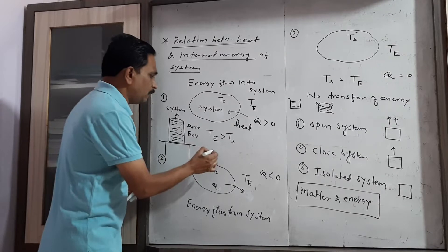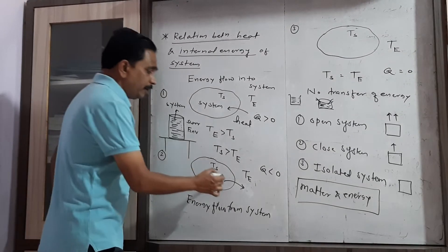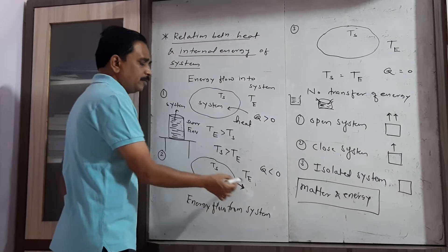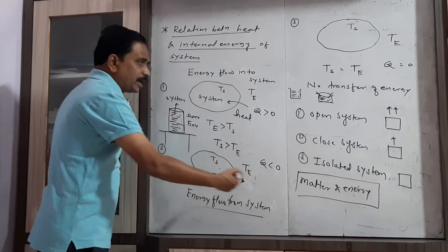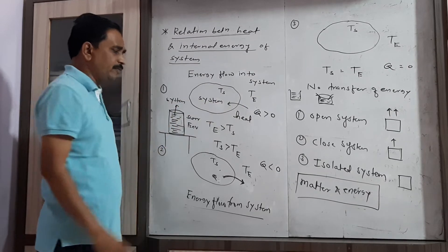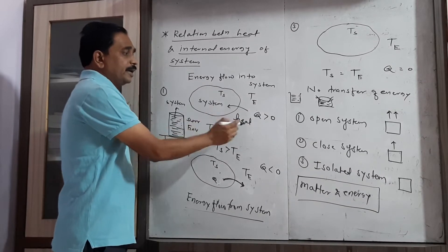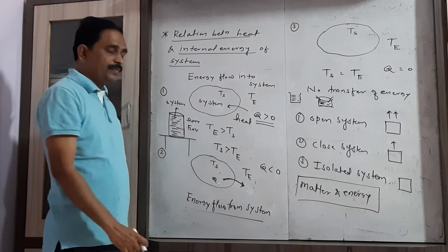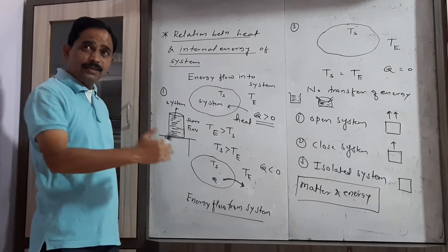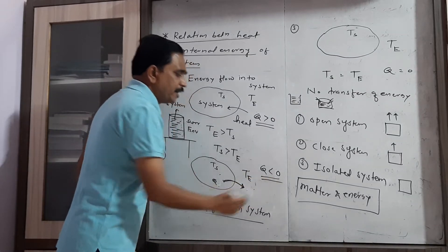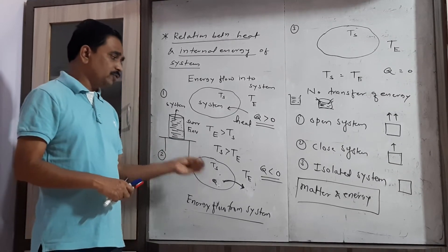In the second case, when the temperature of the system is greater than the temperature of the environment, heat flows from the system to the surrounding or environment. Here, energy is released by the system. The internal energy decreases and it is negative. Whenever energy is absorbed by the system, Q is taken as positive; when energy is released by the system, Q is taken as negative — that is, Q less than zero.